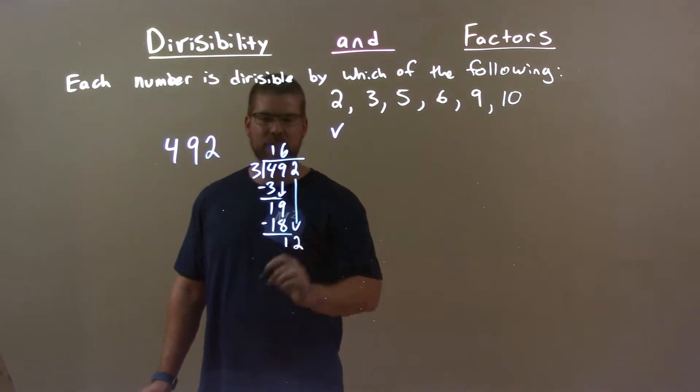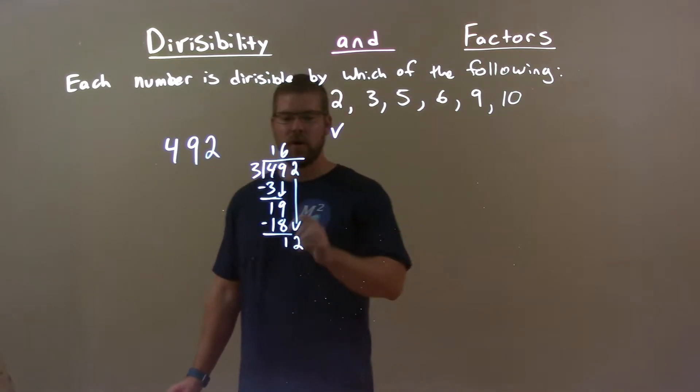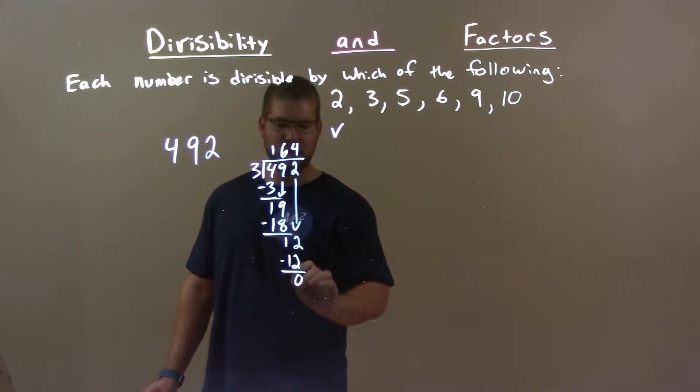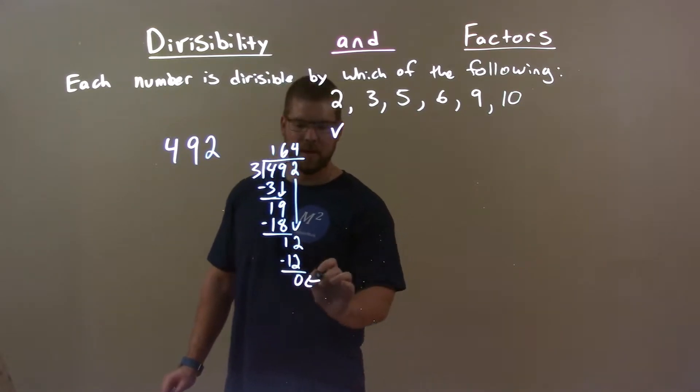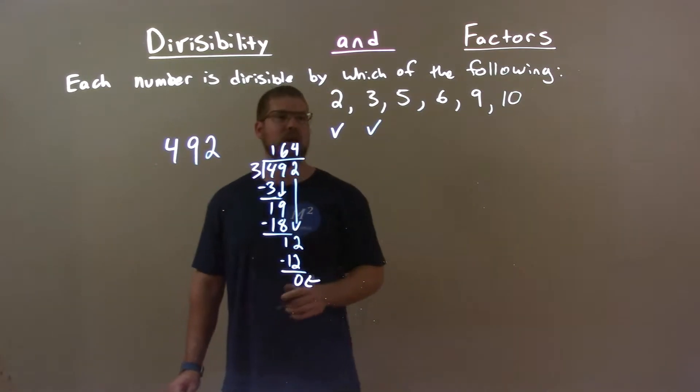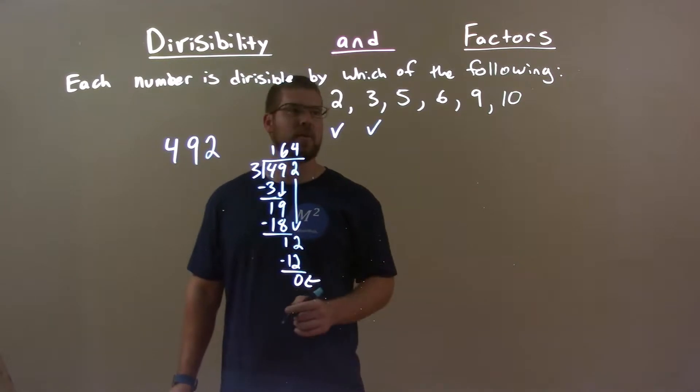Bring down this 2. 3 goes into 12, 4 times. 4 times 3 is 12. Subtract the 2. We got a 0. So, since we end with a remainder of 0, 3 works. We are good. So, 3 goes into evenly. Fantastic.